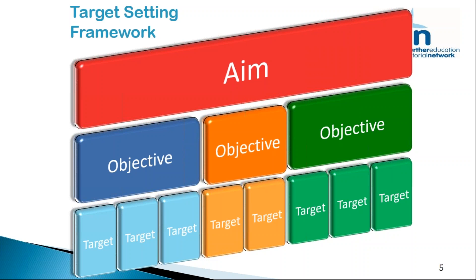I'd like us to go back to thinking about it in that way so we can break down what we're setting. Quite often what we see is that aims are being set, objectives are being set, but we're not actually setting targets. Targets are the small steps to achieving our overall aims. One of the key problems is that we set aims and objectives which are too big to achieve, and therefore we get a sense of failure or partial achievement where that effort isn't rewarded.